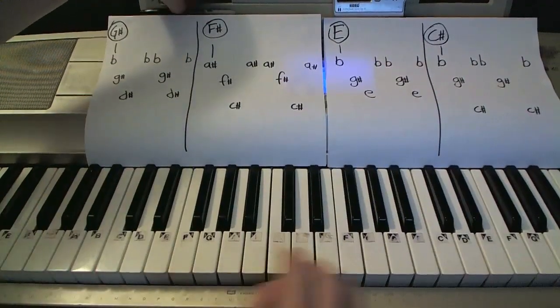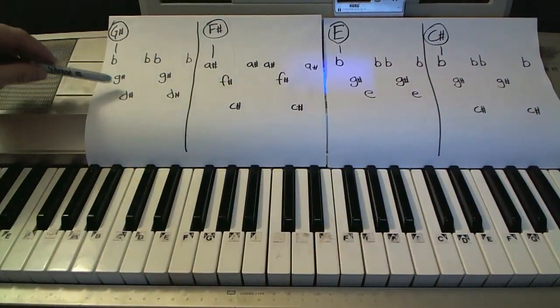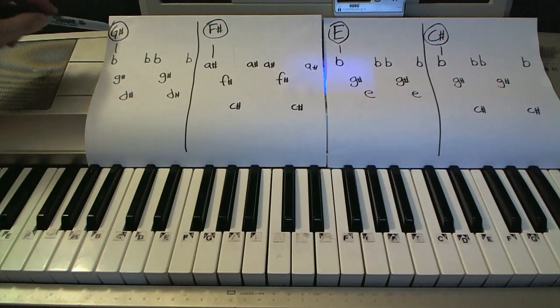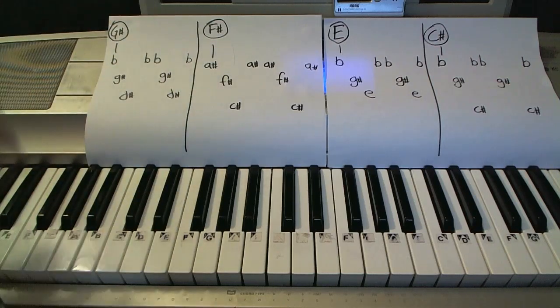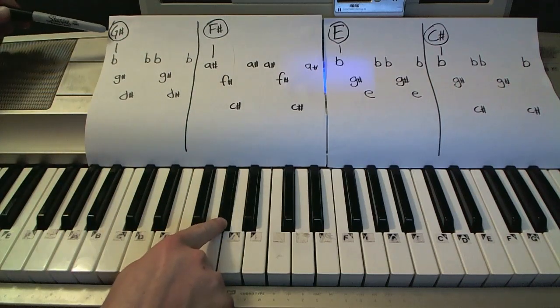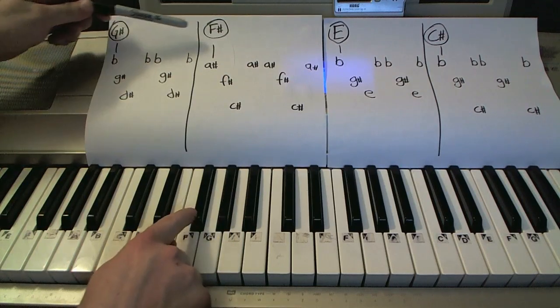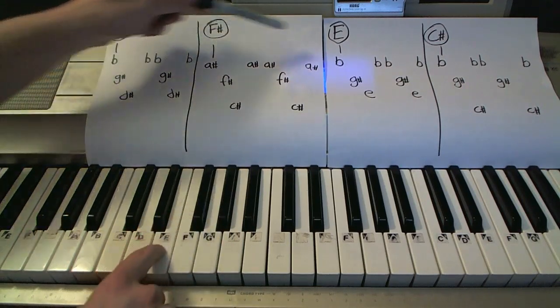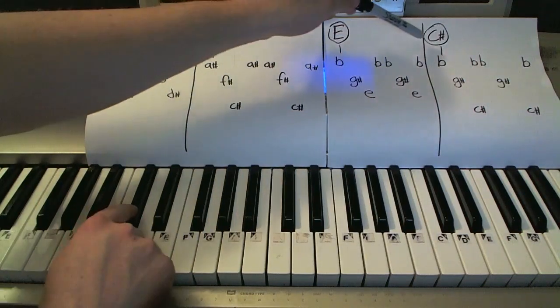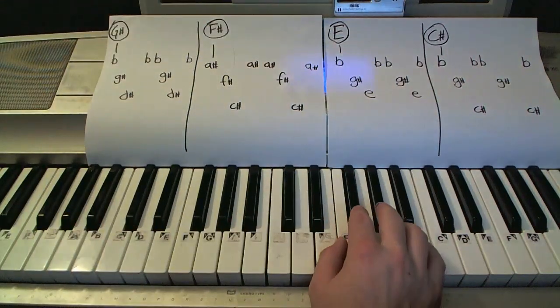Let me explain these sheets. Here's what's going on. The lowercase stuff is right hand stuff. The circles are the left hand stuff. So the left hand is pretty easy. It's going from a G sharp to F sharp to E to C sharp again and again and again.